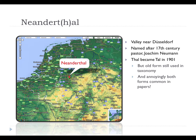'Tal' means valley in German, and it used to be spelled with an H. In spelling reforms in the early 20th century, the H was removed. But because 'Neanderthal' had already been used in taxonomy before then, the H stayed in for species naming. Now both forms are used — in the UK, nature publications use the H; in the US, science publications drop it.